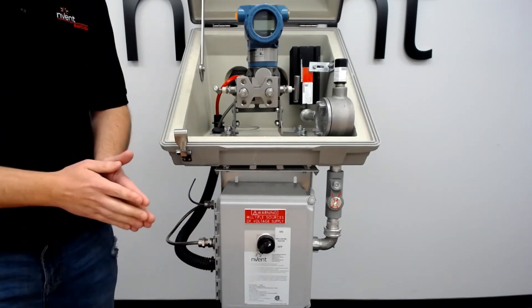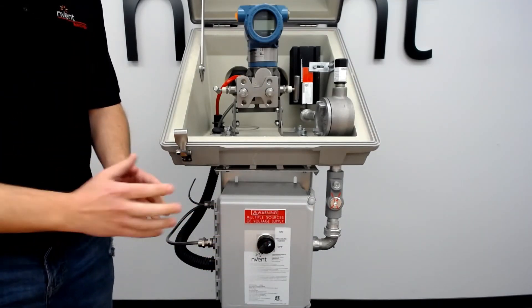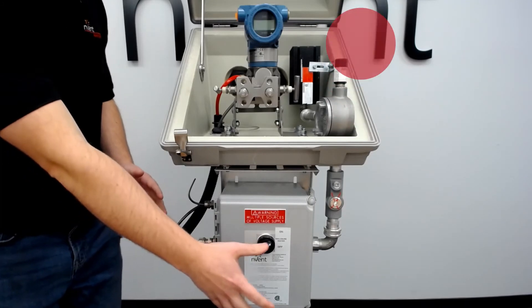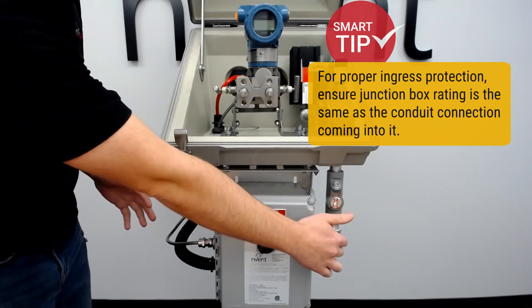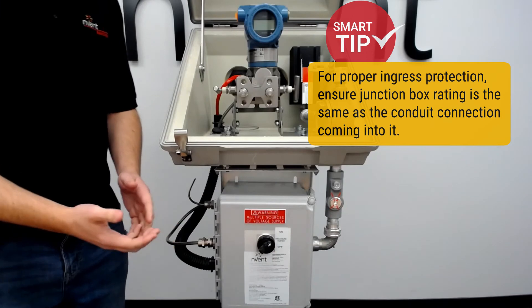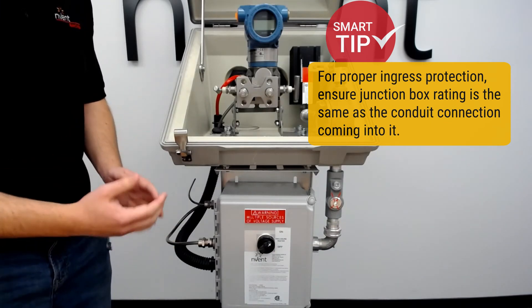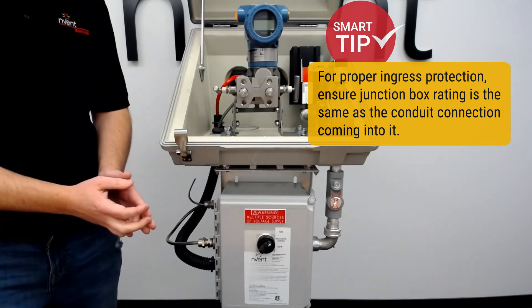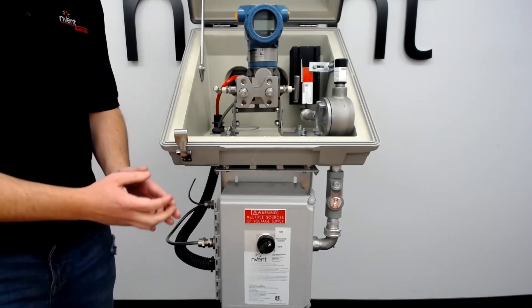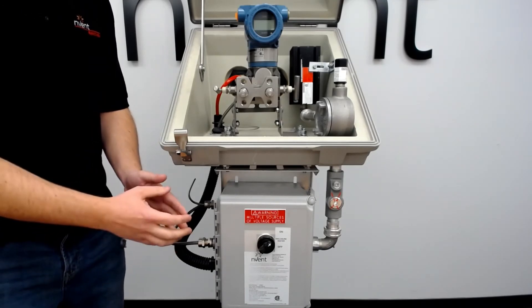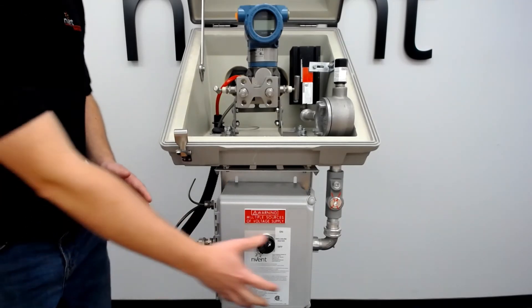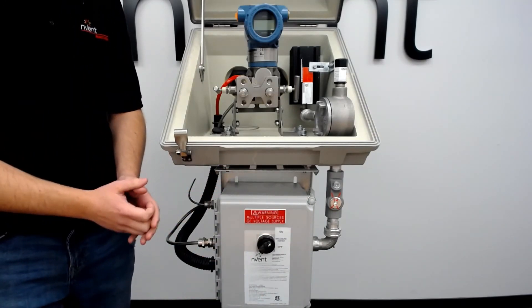We want to make sure that if you have a 4X rated junction box, you keep the penetrations into it rated to the same ingress protection rating. That's important to think about, especially when bringing cabling in - use 4X connections into the junction box, otherwise it loses its ingress protection rating and has the potential for water to get in.